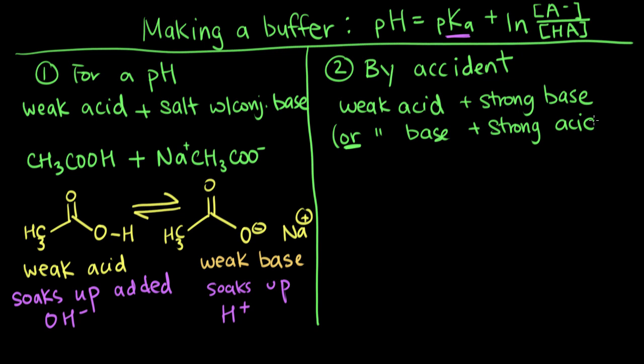And this is very common in titrations. So any time you titrate a weak acid or a weak base, when you titrate it with a strong base or a strong acid, you end up making a buffer for part of your titration. So the example we'll go through here.